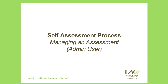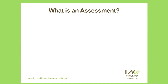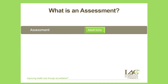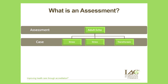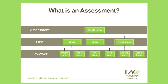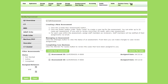Now let's take a look at the self-assessment process. An assessment is a collection of cases in various testing areas within a modality. An assessment must contain at least one case but can contain any number. For this demonstration, we'll start an adult echo assessment with three cases — two stress and one transthoracic. After setting up the cases, we'll assign staff members within the facility to review each case. Each case must be assigned to at least one staff member, but reviews can be assigned to any number of staff.